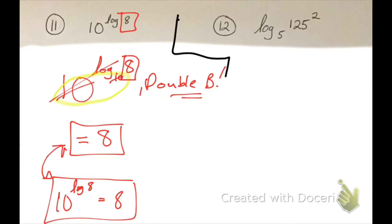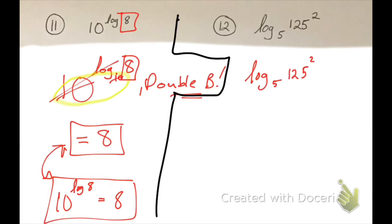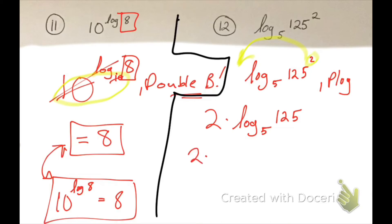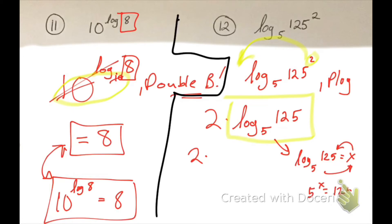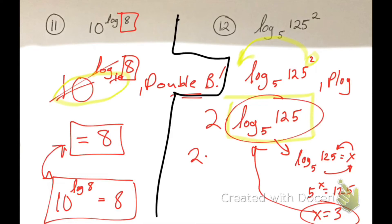Question 12: log base 5 of 125 squared. I'm going to use the power rule since I have that exponent — move it to the front to get 2 times log base 5 of 125. Evaluating the inner logarithm: log base 5 of 125 equals x, recycle, 5 to the x equals 125, and 5 cubed is 125 so x equals 3. Substituting back in, I get 2 times 3, which is 6.